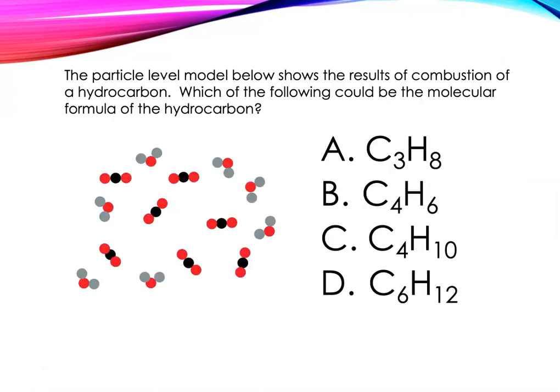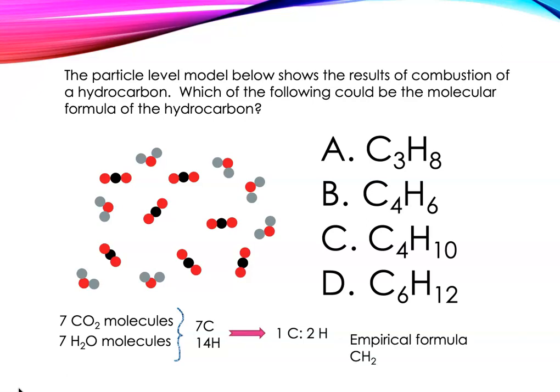Let's use this strategy to work through a multiple choice problem. The particle level model below shows the results of combustion of a hydrocarbon. Which of the following could be the molecular formula of the hydrocarbon? So we're going to start by counting again. All right, there are seven CO2 molecules here, there are seven H2O molecules, and so from that I can determine that there are seven carbons and 14 hydrogens. But if I look at my multiple choice possible answers, I don't have C7H14 as a choice.